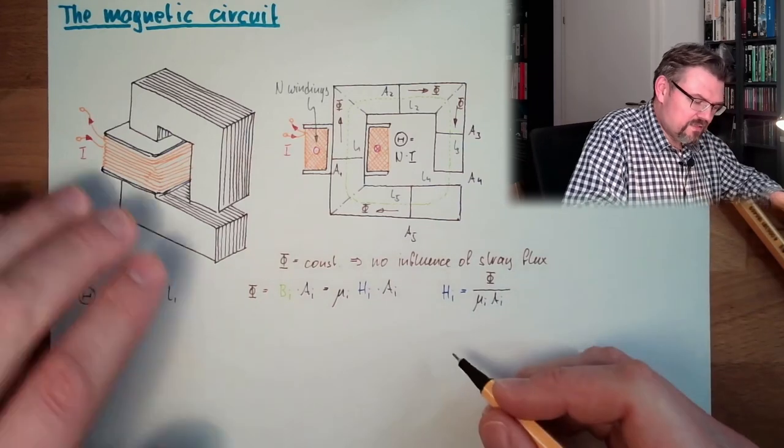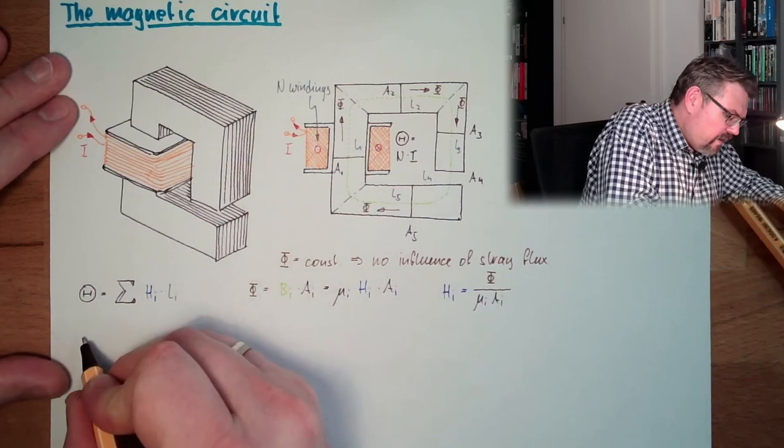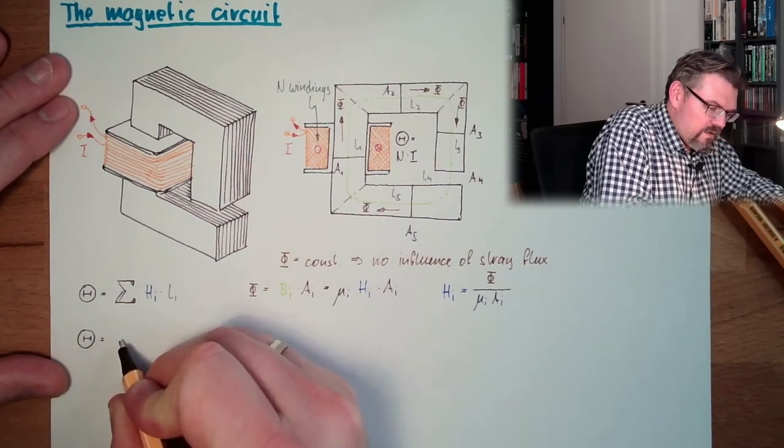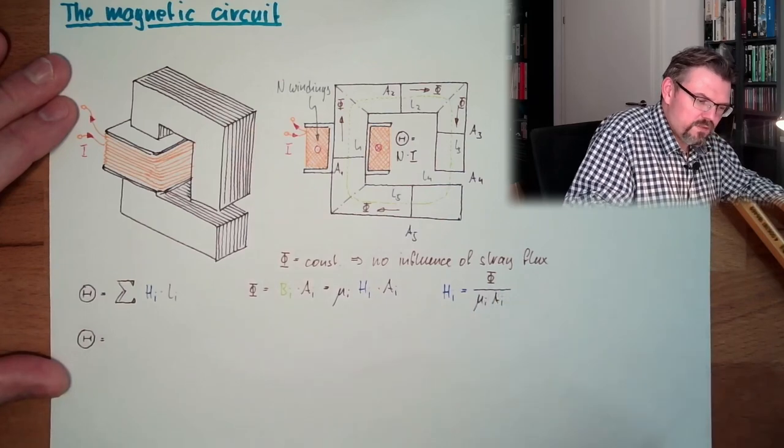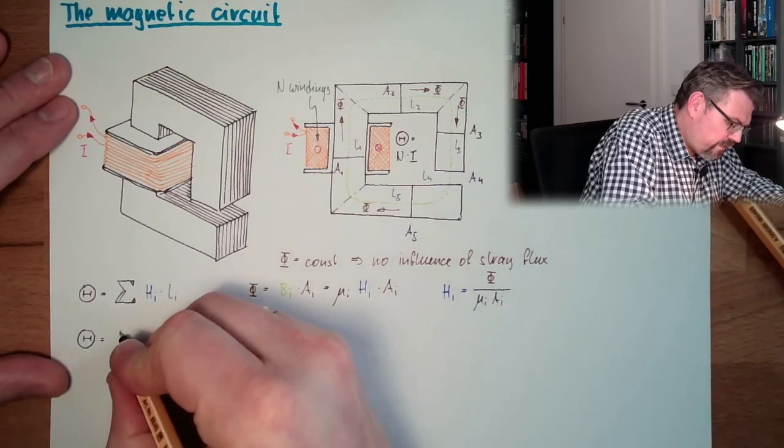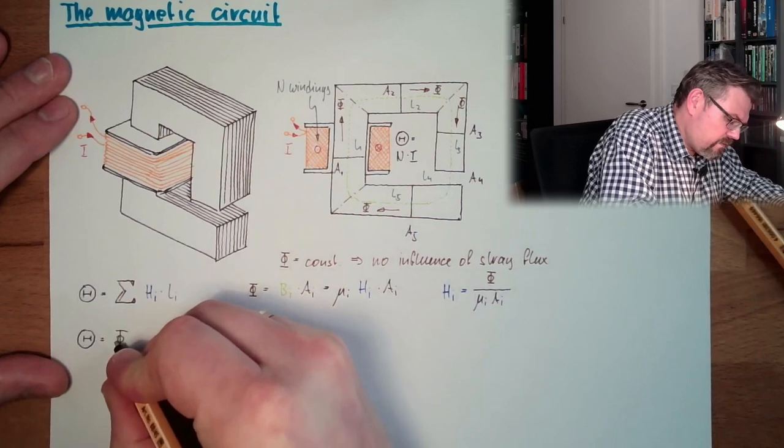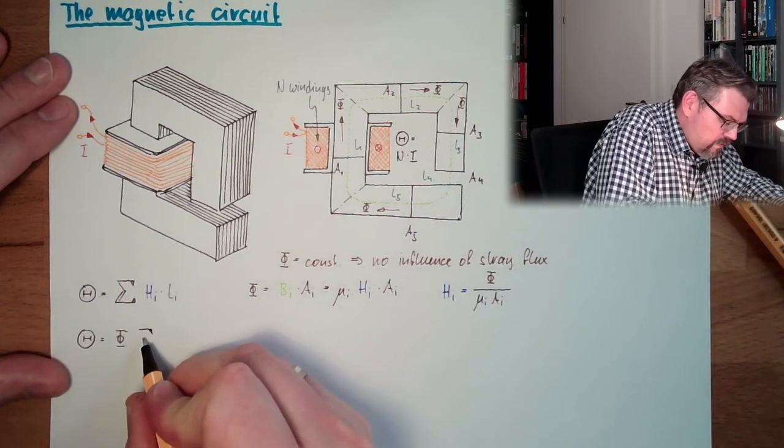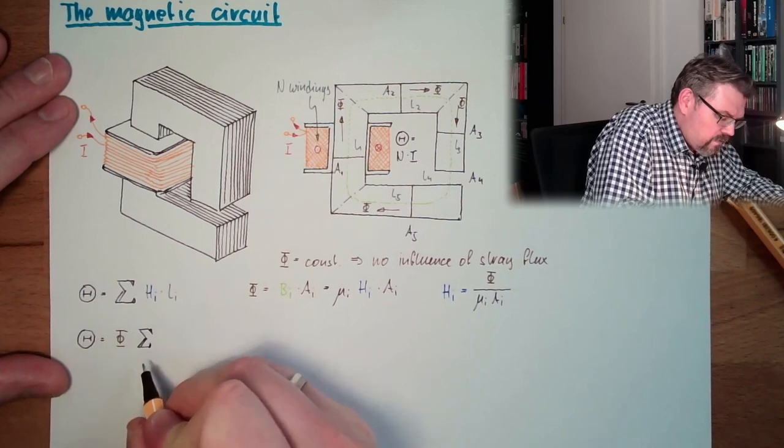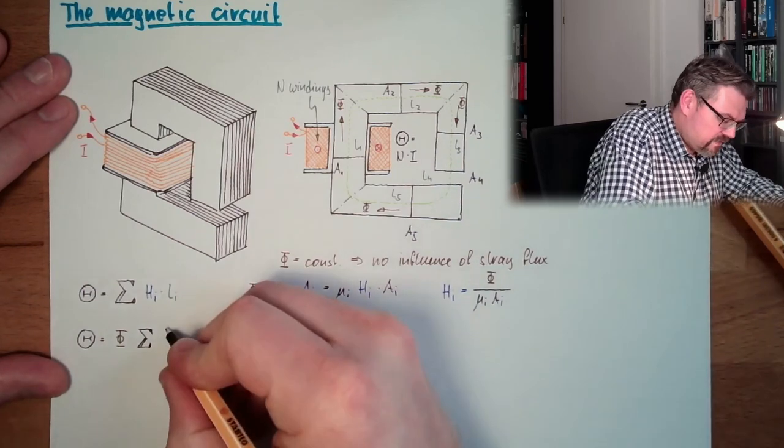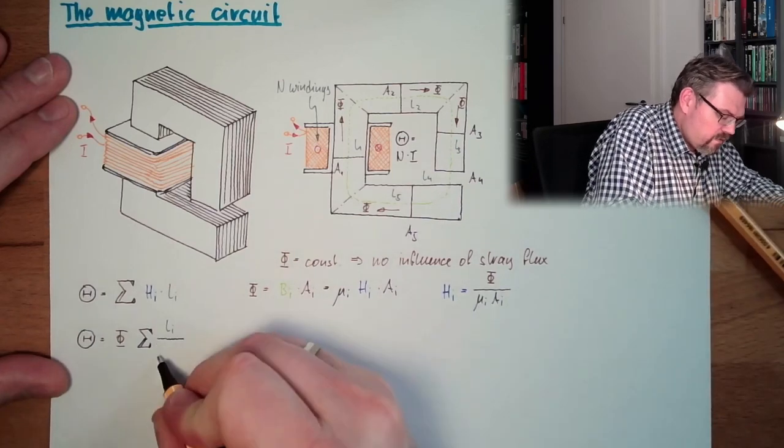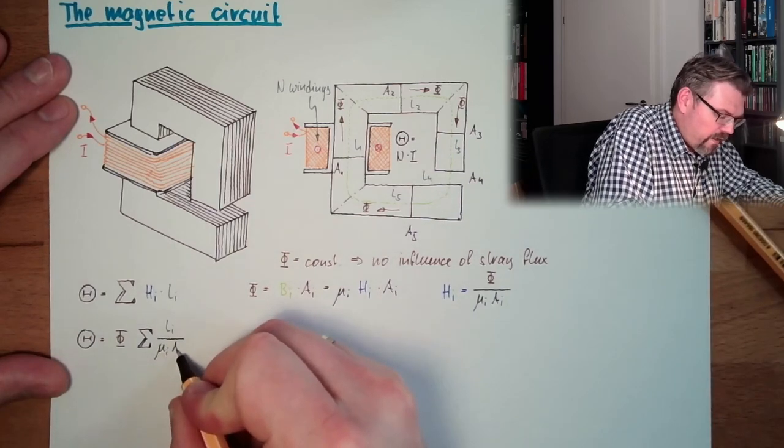So this means, if I put this now in here, our theta is the sum, or actually phi is always the same. Phi is always the same. So we have phi and then we have the sum of all Li's divided by mu i, Ai.